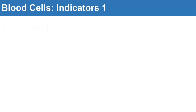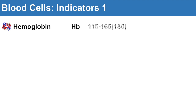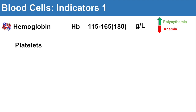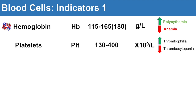Other indicators you might see in a blood panel include hemoglobin. The range is typically 115 to 165, or up to 180 in males, in grams per liter of blood. Anything higher would be polycythemia; anything lower would be anemia. With platelets, the range is about 130 to 400 times 10 to the 9th per liter — like white blood cells. Anything higher would be thrombophilia or thrombocytophilia, and anything lower would be thrombocytopenia.